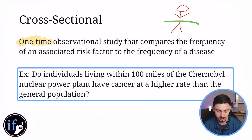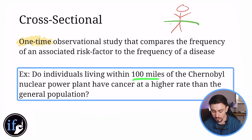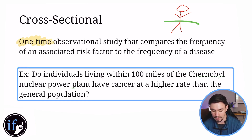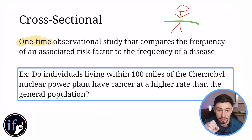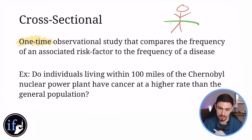A good example of cross-sectional: do individuals living within 100 miles of the Chernobyl nuclear power plant have cancer at a higher rate than the general population? If you just check in once — asking 'do they have it right now?' — that's cross-sectional.